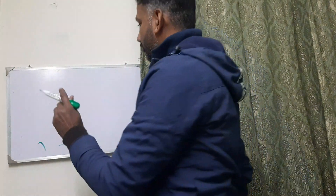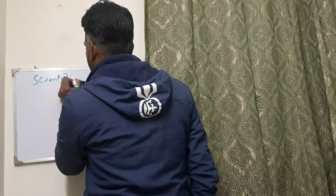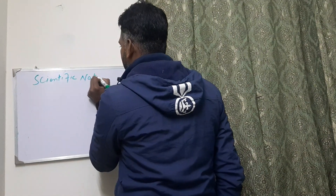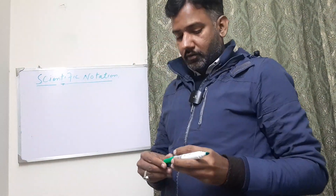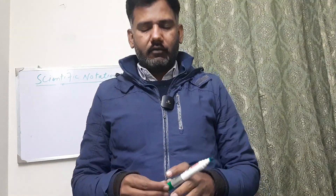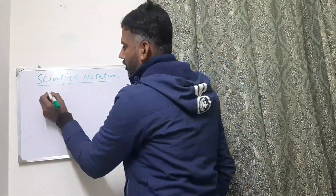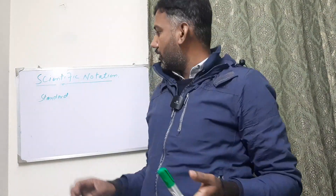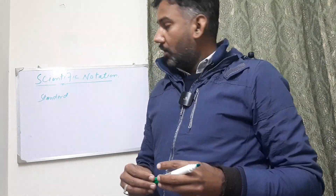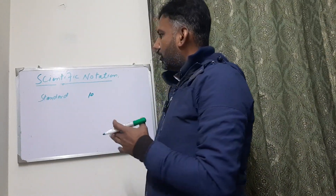I'm going to teach you about scientific notation. Before teaching, I'm going to tell you what is the difference between scientific notation and standard form. In fact, scientific notation and standard form are both the same. We can see scientific notation as standard form, in which we write the numbers in powers of 10. This is called scientific notation.